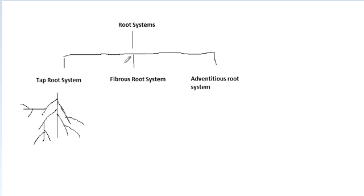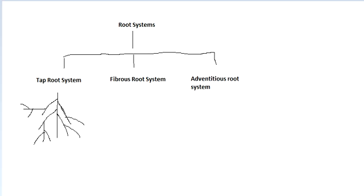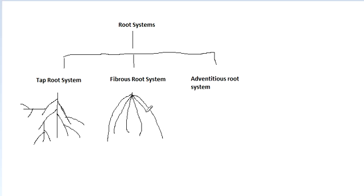Now, what is the fibrous type of root system? In this kind of root system, a primary root develops at first and it behaves like a taproot. But this doesn't last for long and it gets destroyed. Then from the lower part of the stem, roots arise. These roots have a common point of origin and there is no main axis. So they are named as fibrous roots.